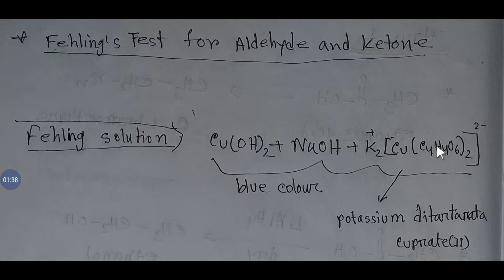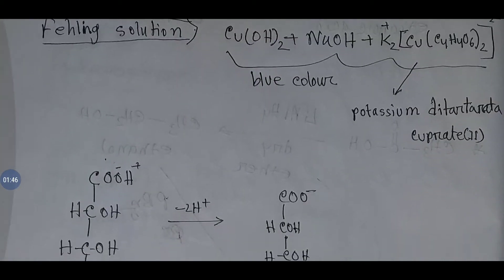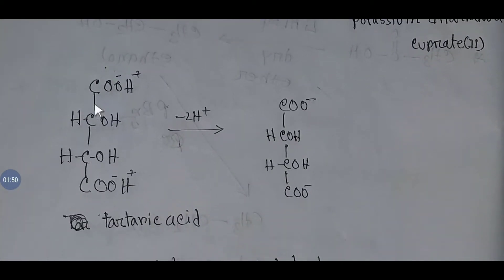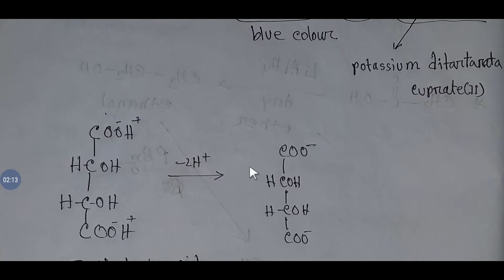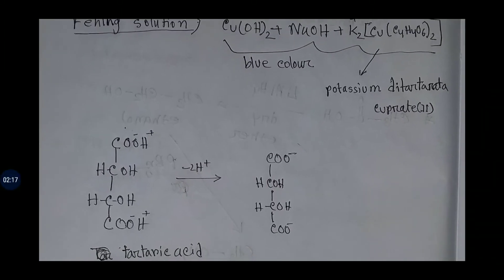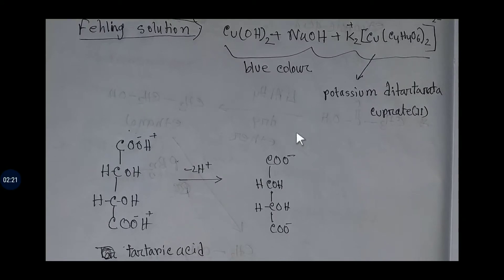The two minus charge comes from the ditartrate ion. We get this ditartrate ion from tartaric acid. This is the formula of tartaric acid — you see that carbons one, two, three, four — the end carbons have carboxylic acid groups. If you remove a hydrogen from each carboxylic group, you will get the ditartrate ion. So you are getting potassium ditartrate cuprate.